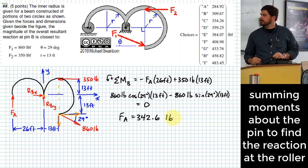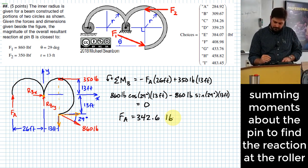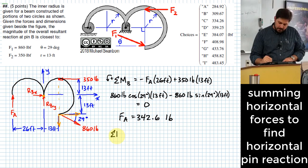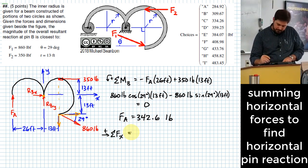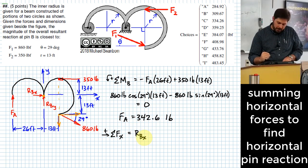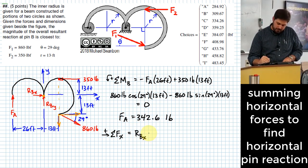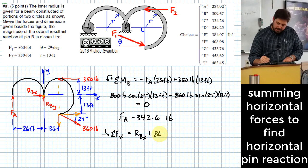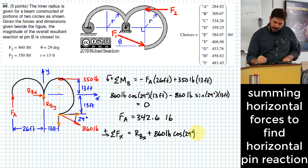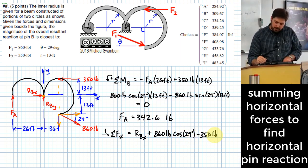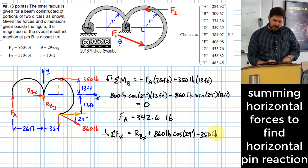What's next? We can now sum forces in the X and Y. So what do we have in the X? RBX, then what? Plus 860 pounds times the cosine 29 degrees minus 350 pounds. Anything else horizontally?